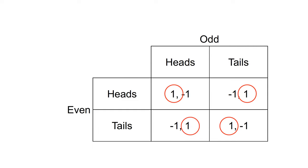There are no pure strategy Nash equilibria for this game. For any combination of heads or tails, one of the players would want to change their choice. There are what are called mixed strategy Nash Equilibria in this game, but mixed strategy equilibria are beyond the scope of this video.